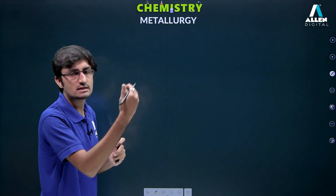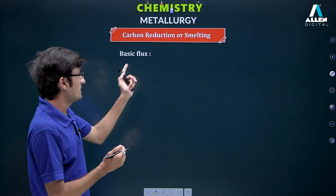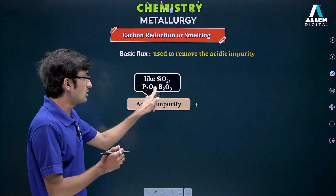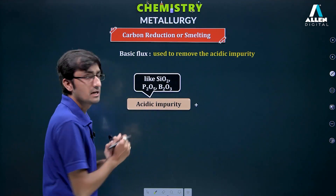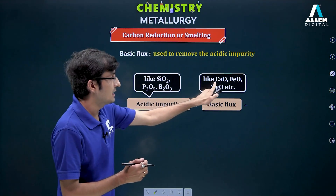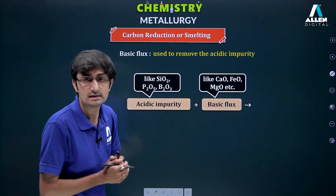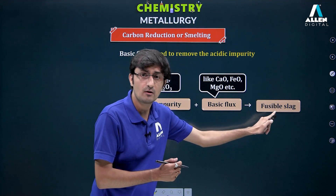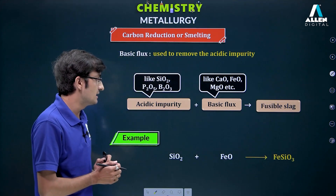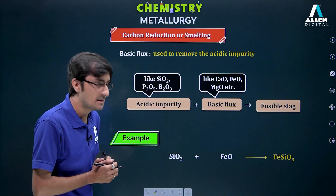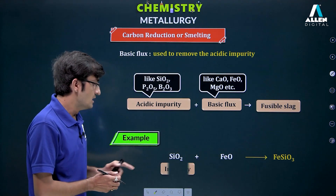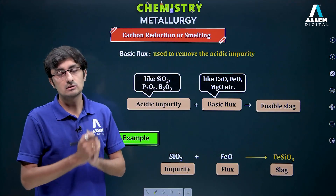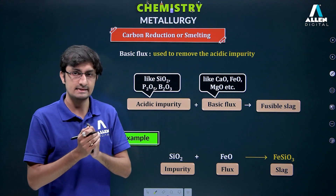Basic flux is the opposite. It is used to remove acidic impurity. If non-metal oxides (acidic impurities) are already present, we add metal oxides (basic flux) to react with them and form slag in fusible format. For example, if SiO₂ is present as impurity, we add a basic oxide as flux, and slag is formed. So those were acidic flux and basic flux.